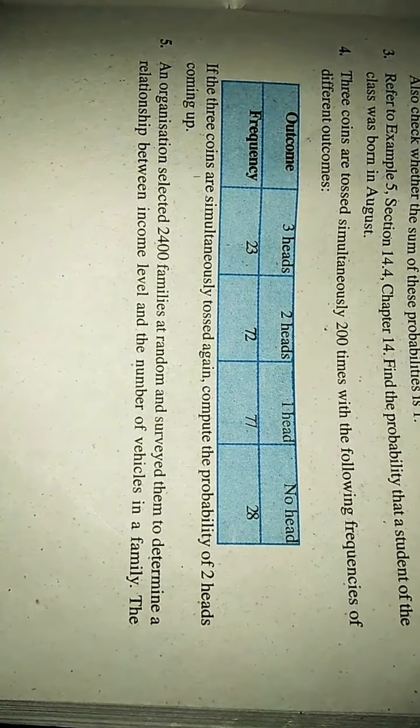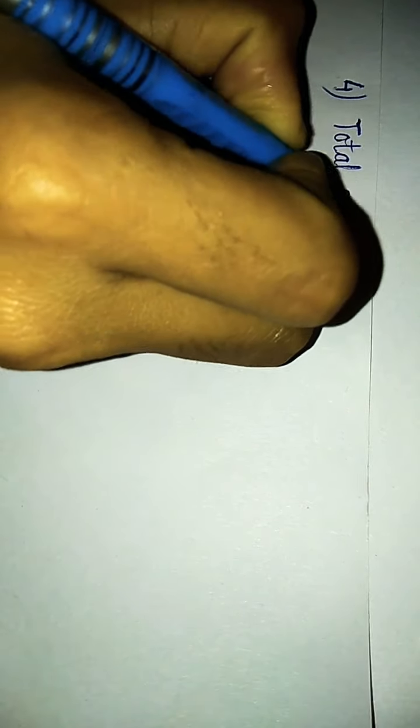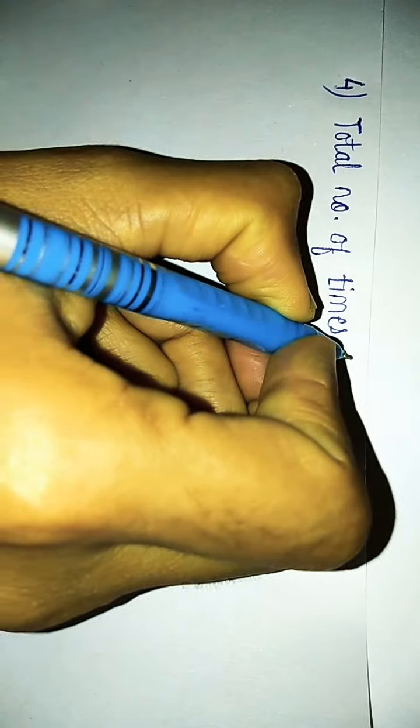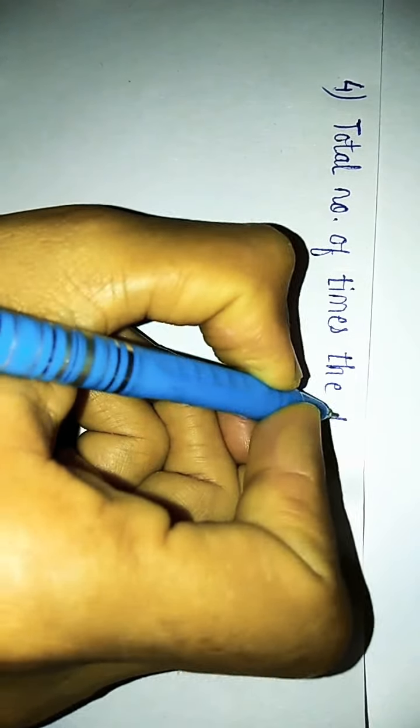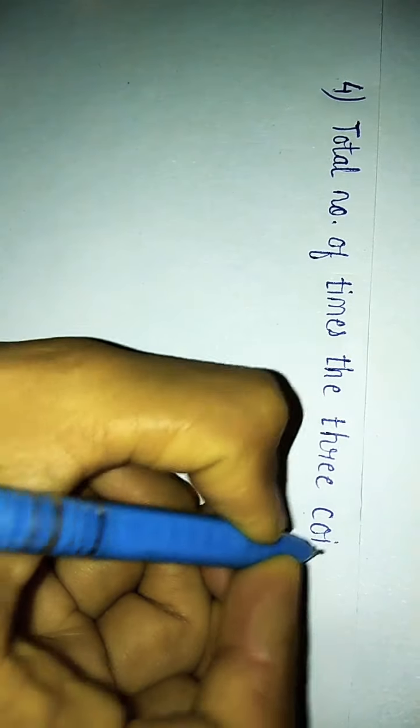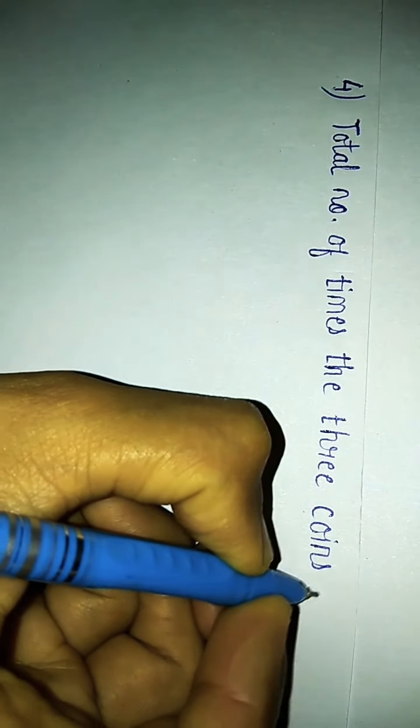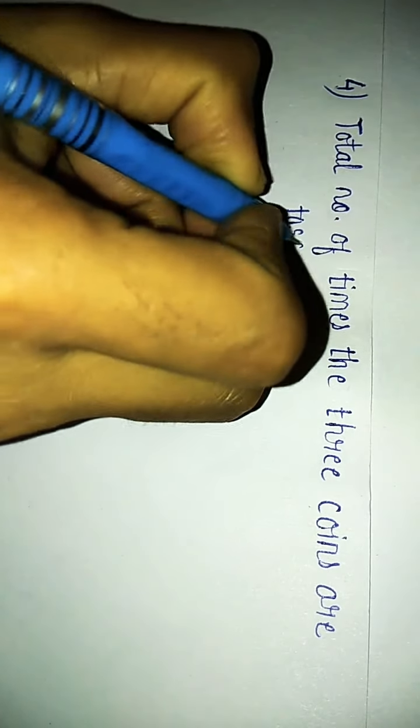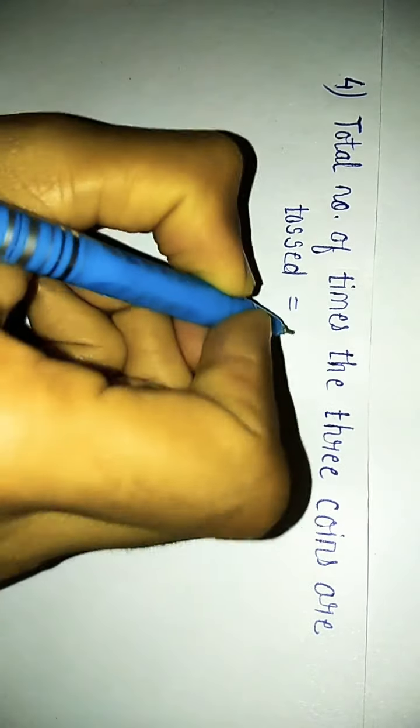Let us write. We have total number of times the 3 coins are tossed. How many times it is tossed? 200. So, this will be our total number of trials.